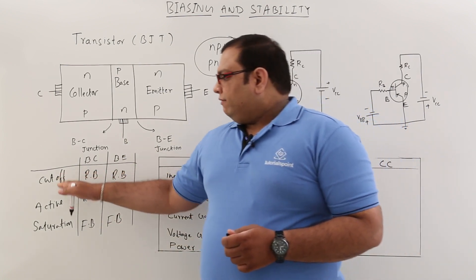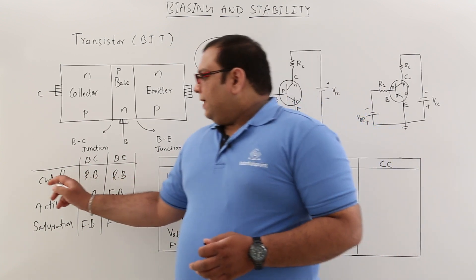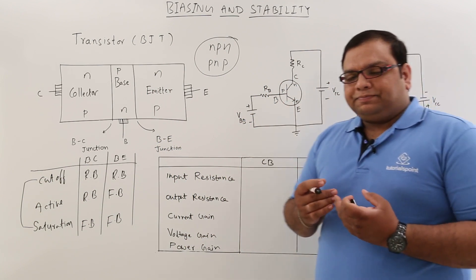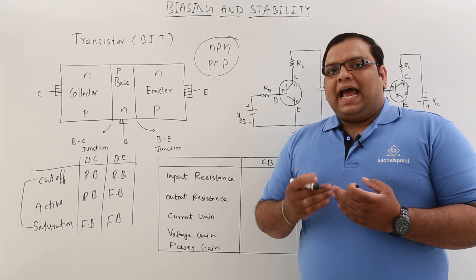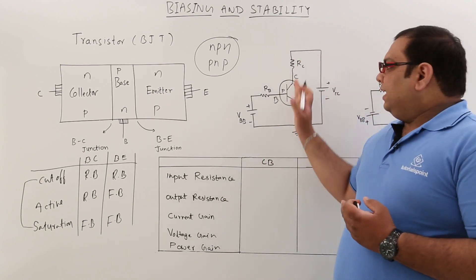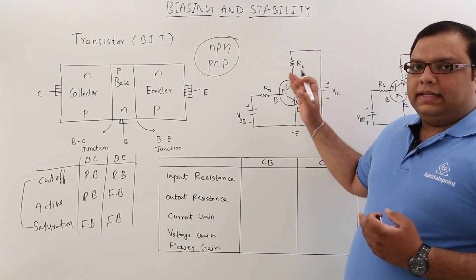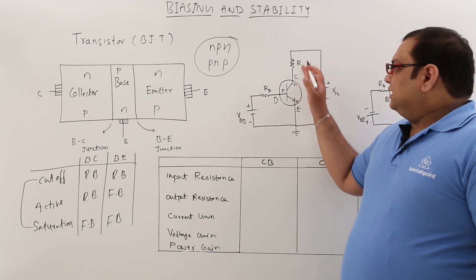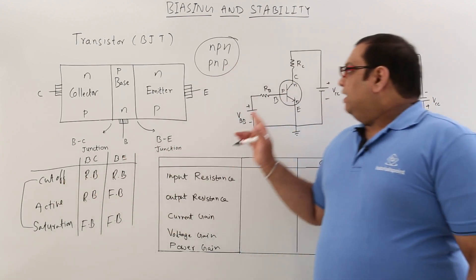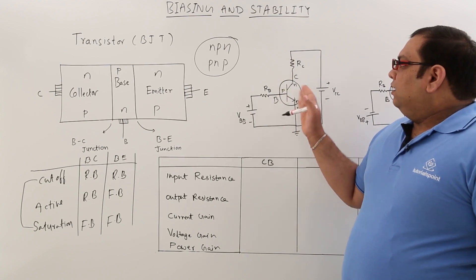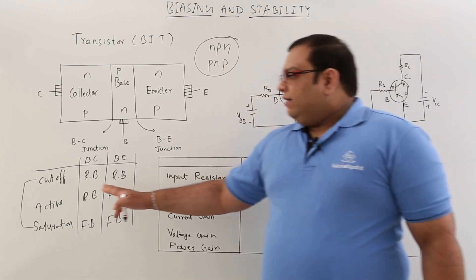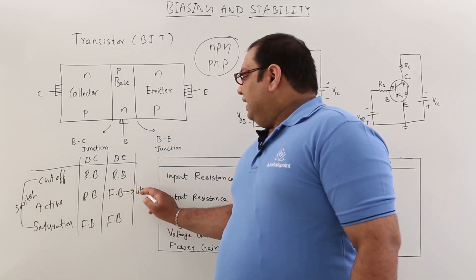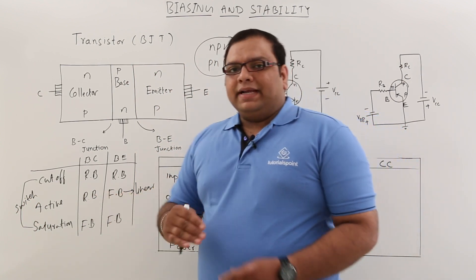Cutoff and saturation are used for switching operations. The transistor has two main operations: as a linear amplifying device, and as a switch with two positions — conducting (on) and non-conducting (off). When conducting, that corresponds to saturation, where both junctions are forward biased — this is the switch-closed position. In cutoff, both PN junctions are reverse biased and the transistor is fully open — the switch-open position.